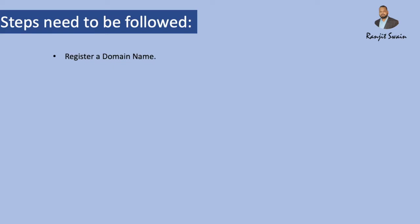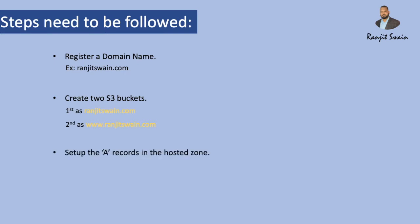There are a few steps that need to be followed. The first step is to register a domain name, for example 11x1.com, or your name.com, or any business name. Then we have to create two S3 buckets — the first should be your domain name, like 11x1.com, and the second should be www.11x1.com. Then we set up the A records in the hosted zones.